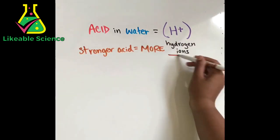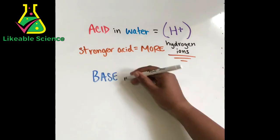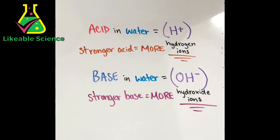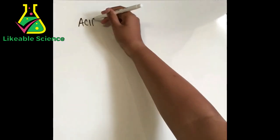Now let's talk about bases. If you put a base in water, it will produce OH- hydroxide ions. The stronger the base is, the more ions it will produce.